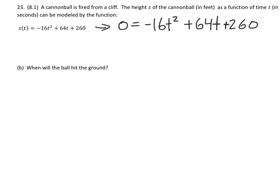So let's go ahead first and factor out, to make this a little bit easier, factor out a four from each of these terms, because each of them are multiples of four. So after factoring out a four, we have 4 times the quantity -4t² + 16t + 65.